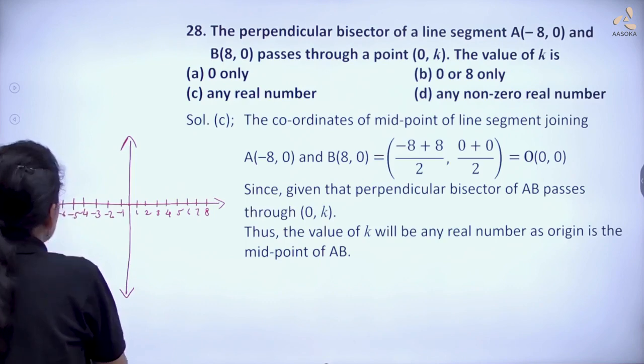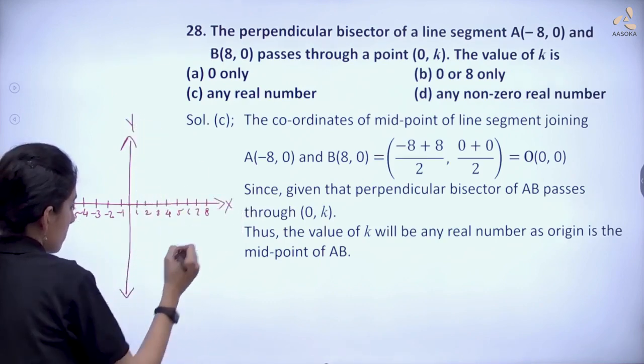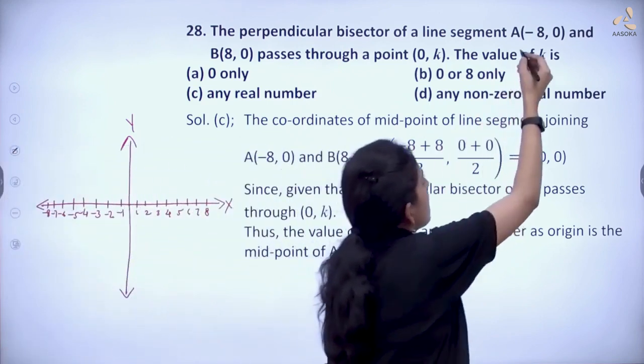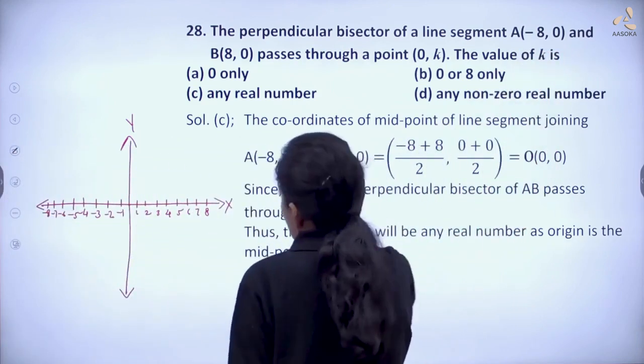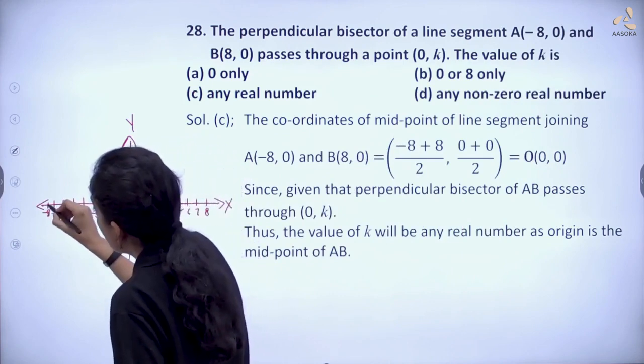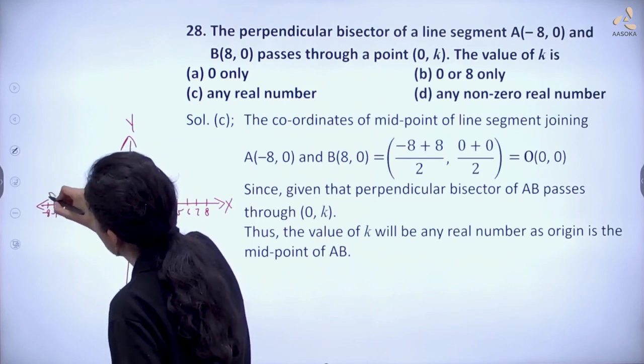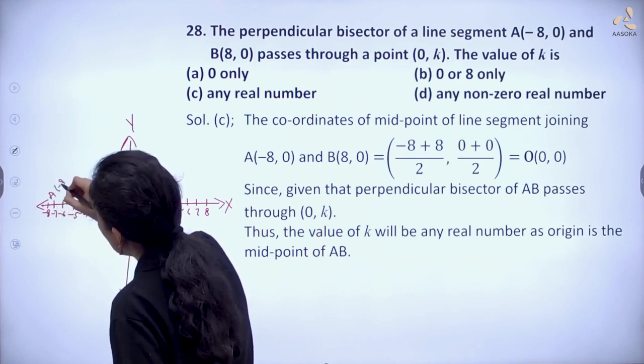This is y-axis and this is x-axis. So let's plot these two points. A(-8, 0) is here. So this is A(-8, 0).